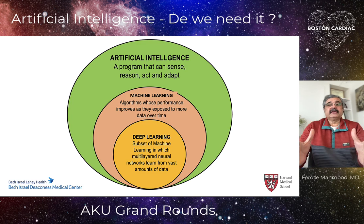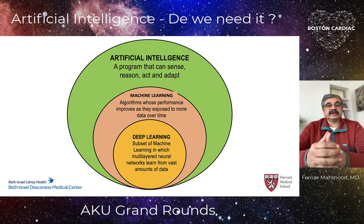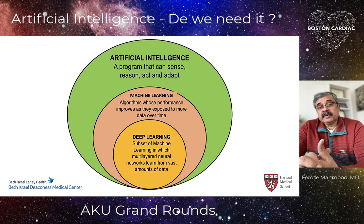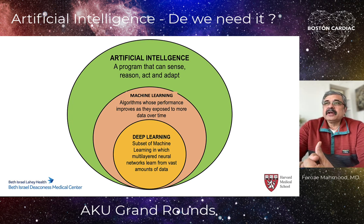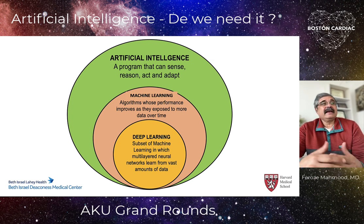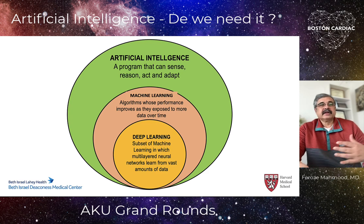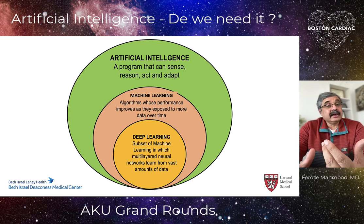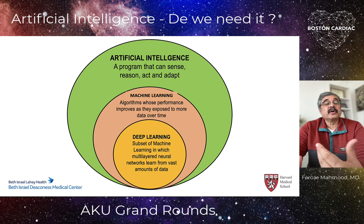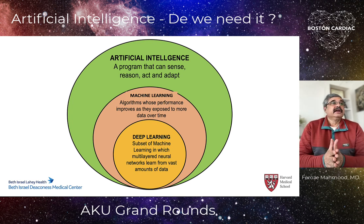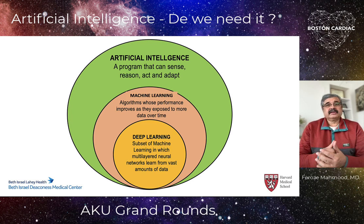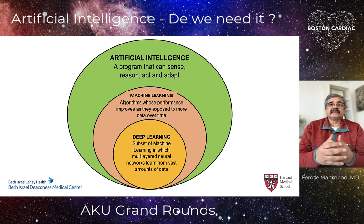Artificial intelligence is a big umbrella term — a program that can sense, reason, act, and adapt to circumstances. It starts with deep learning, which is a subset of machine learning in which multi-layered neural networks learn from vast amounts of data. Then comes machine learning, where algorithms improve as they are exposed to more data over time — the commercialization of those deep learning networks into chatbots, neural networks for claim analysis, and similar applications.